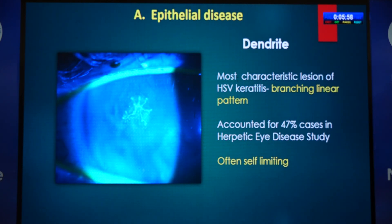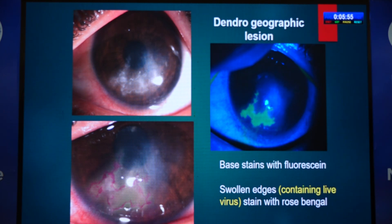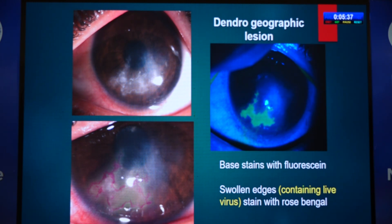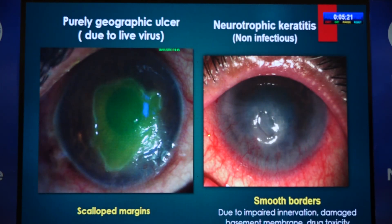A dendritic or dendrogeographic lesion has a map-like pattern. The base stains with fluorescein, and the swollen edges containing live virus stain with rose bengal. When staining, do rose bengal first, quickly followed by fluorescein — because fluorescein used first will diffuse into the center and obscure rose bengal staining. A purely geographic ulcer due to live virus must be differentiated from metaherpetic or neurotrophic keratitis, which has smooth borders and sloping edges.